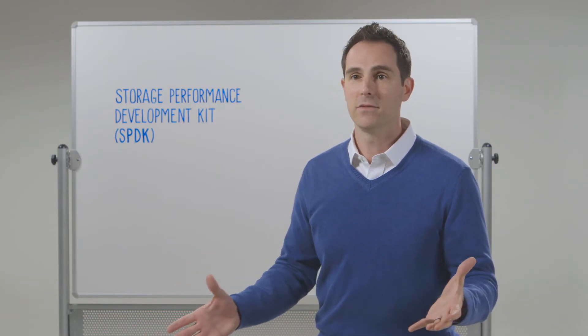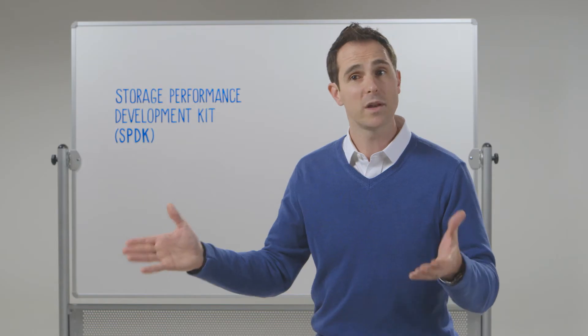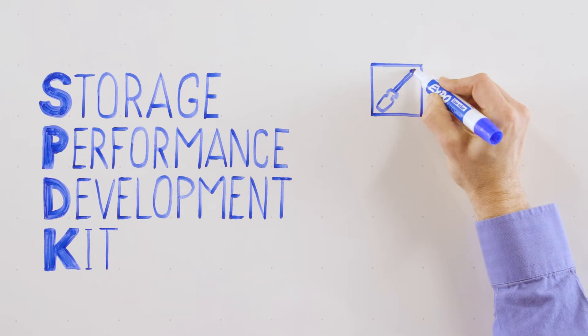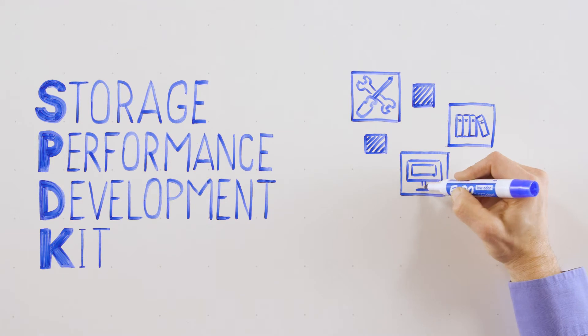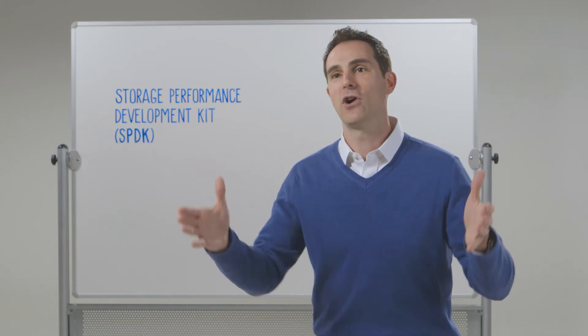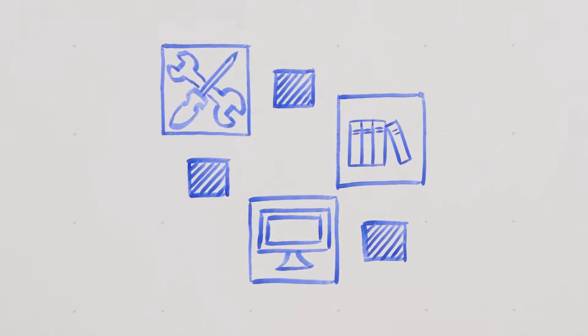At Intel, we vitally care about people's data centers — about how fast and efficient and excellent they can be. So we really wanted to put software together to make sure that when that media arrives, all the software that wants to take advantage of it can. SPDK is open source software — a set of drivers, libraries, and example apps designed for maximum scalability and efficiency. They make a kind of reference architecture, but each of those things can be pulled out and used discretely.